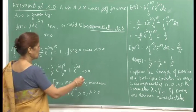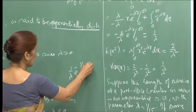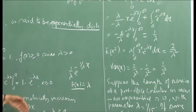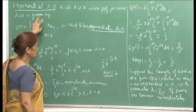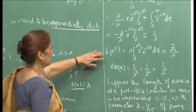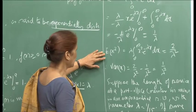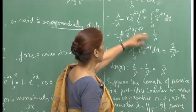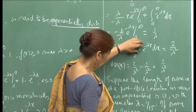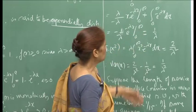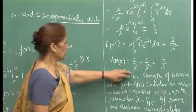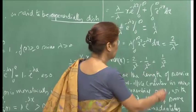Some places define it as 1 by lambda times e raised to minus x by lambda, in which case the expectation becomes lambda — it is always the inverse of the parameter. For the variance, E[x squared] requires two iterations of integration by parts, giving 2 by lambda squared, so variance equals 2 by lambda squared minus 1 by lambda squared, which equals 1 by lambda squared.